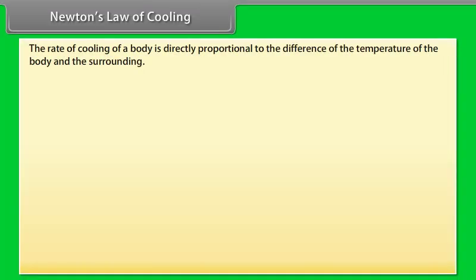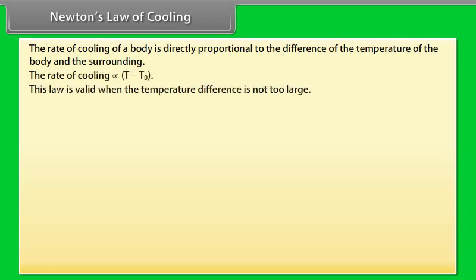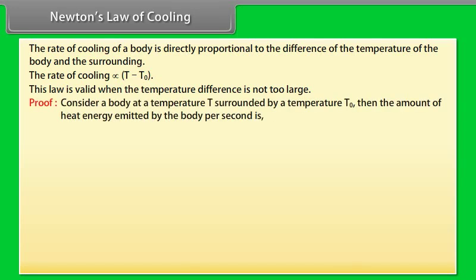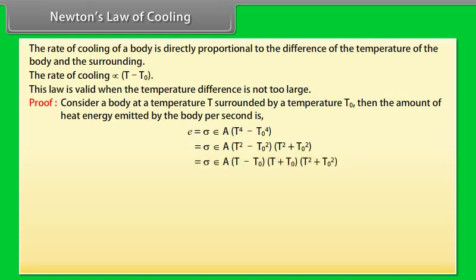Newton's Law of Cooling states that the rate of cooling of a body is directly proportional to the difference between the temperature of the body and the surroundings. The rate of cooling is directly proportional to (T − T0). This law is valid when the temperature difference is not too large. Consider a body at temperature T surrounded by an environment at temperature T0. The amount of heat energy emitted by the body per second is E = σεA(T − T0)(T + T0)(T² + T0²).